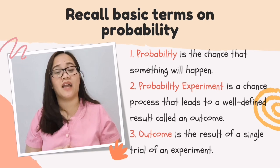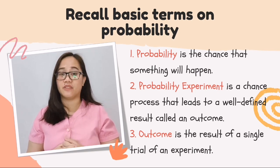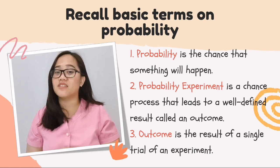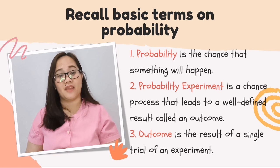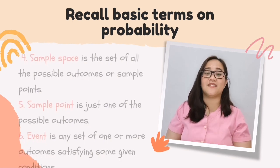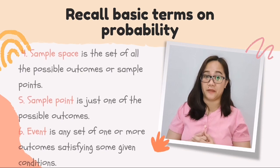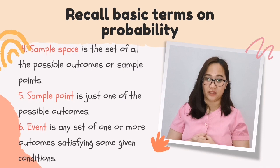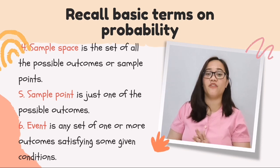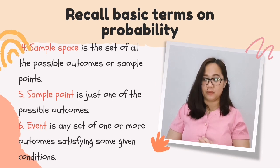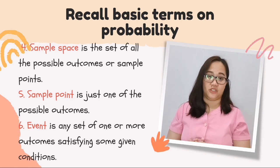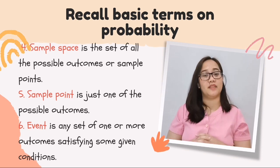That result is called an outcome. Outcome means the result of an experiment — for example, we roll a die and it turns out one, so the outcome is one. Sample space is the set of all outcomes in a given experiment or the set of all sample points. A sample point is the result of a single trial in a probability experiment. Finally, an event is a desired outcome given a condition. Those are the basic terms in probability we need to recall.